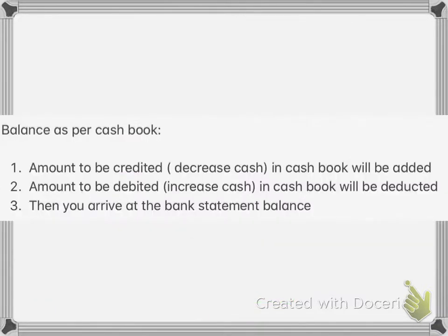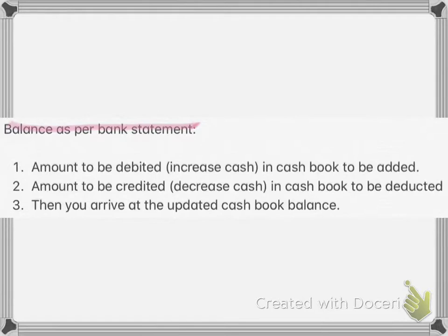Here are some tips. For balance as per cash book: the amount to be credited, which will decrease cash in the cash book, will be added; the amount to be debited, which increases cash in the cash book, will be deducted. You will then arrive at the bank statement balance. For balance as per bank statement: the amount to be debited, which increases cash in the cash book, will be added; the amount to be credited, which decreases cash in the cash book, will be deducted. You will then arrive at the updated cash book balance.